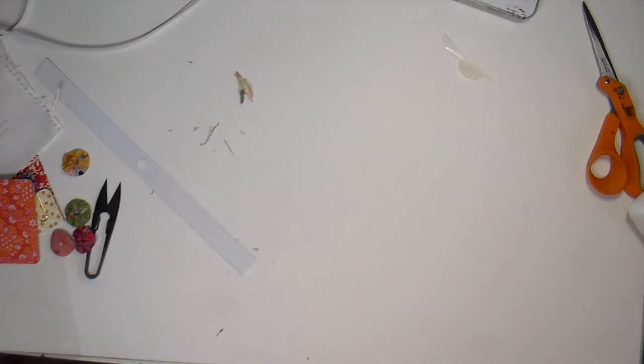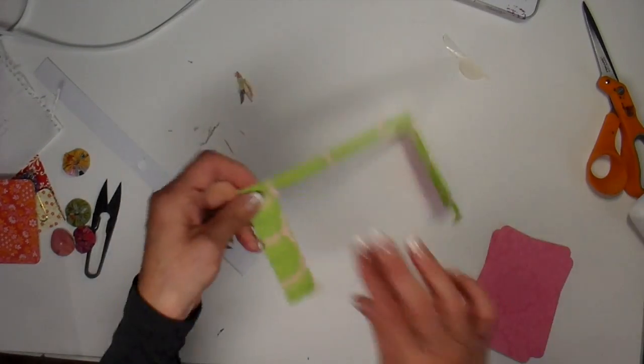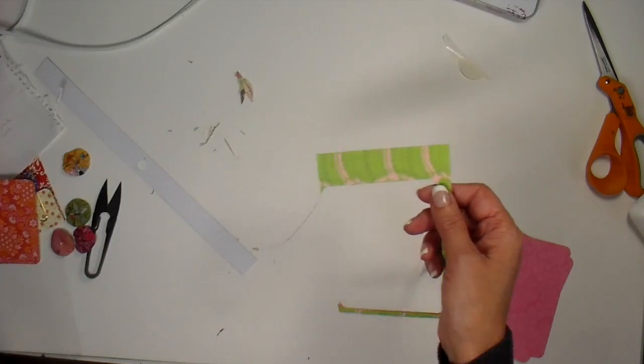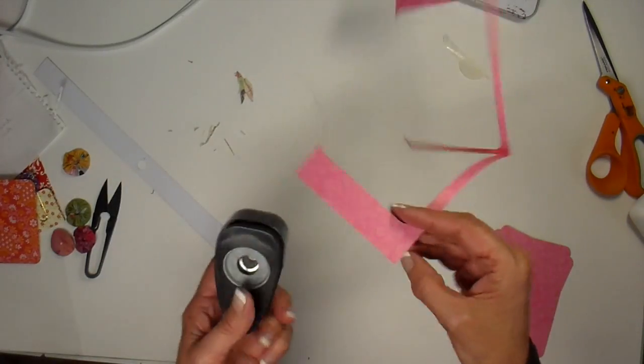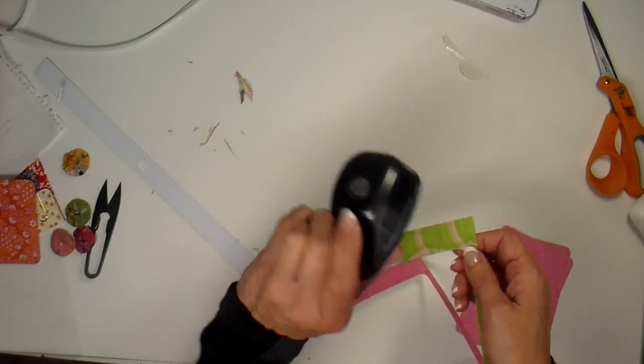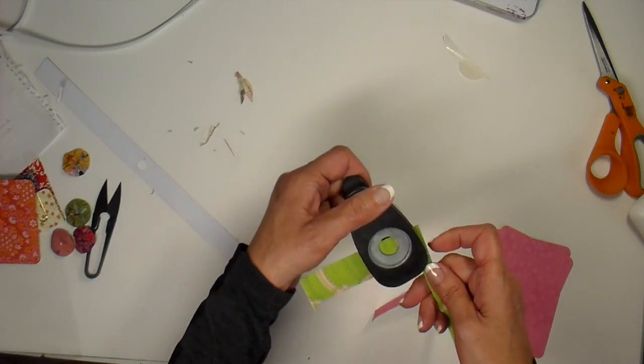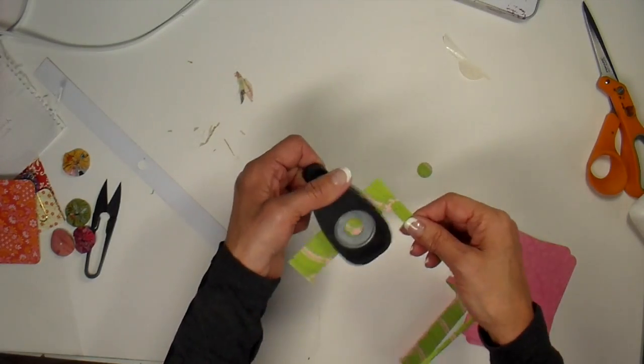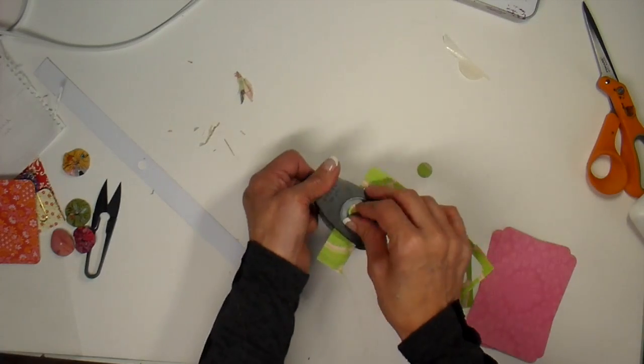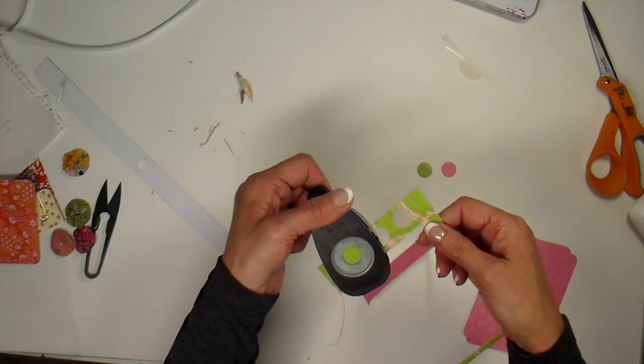The next thing I do is I keep all of these scraps and I cut three little circles using my five-eighths inch punch. This is just to cover up the back of the paper clip once you've glued it.